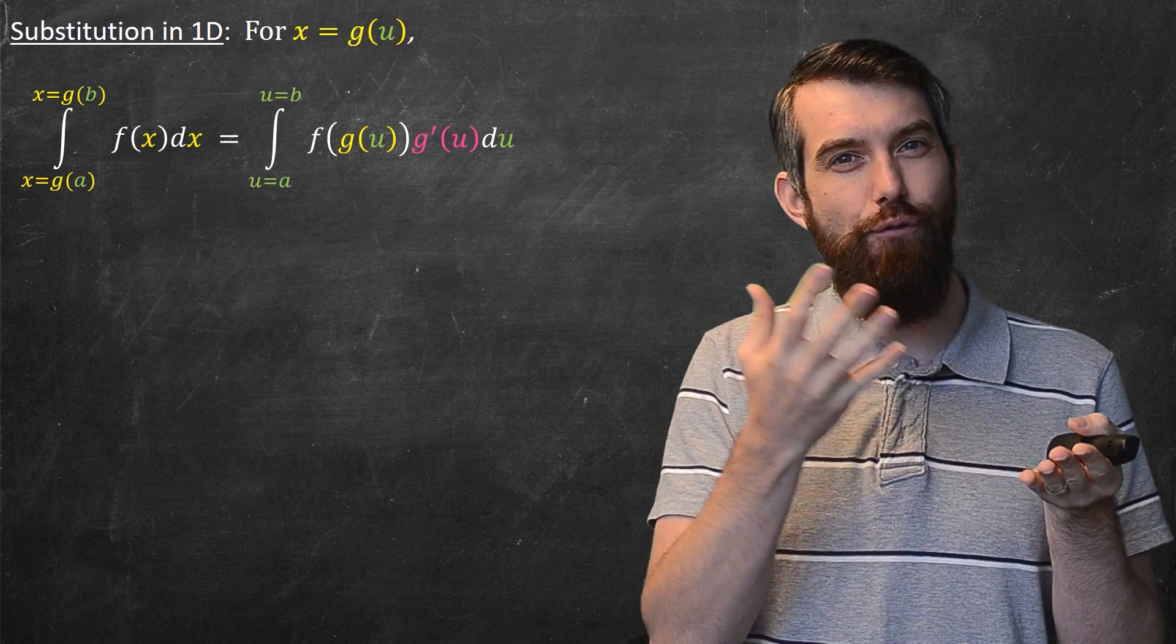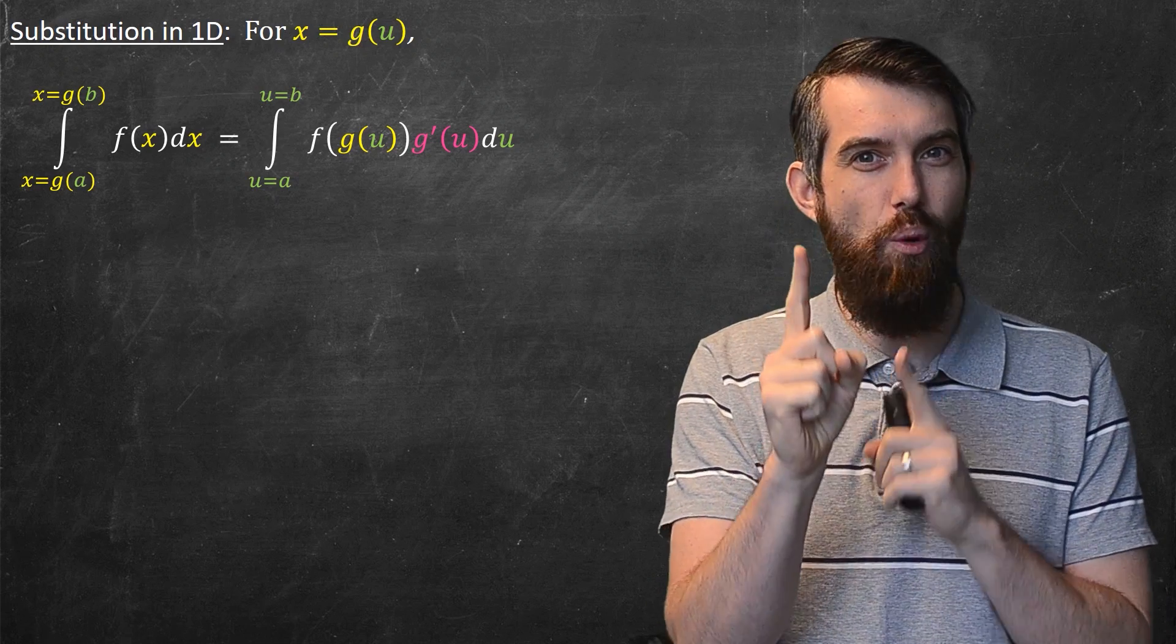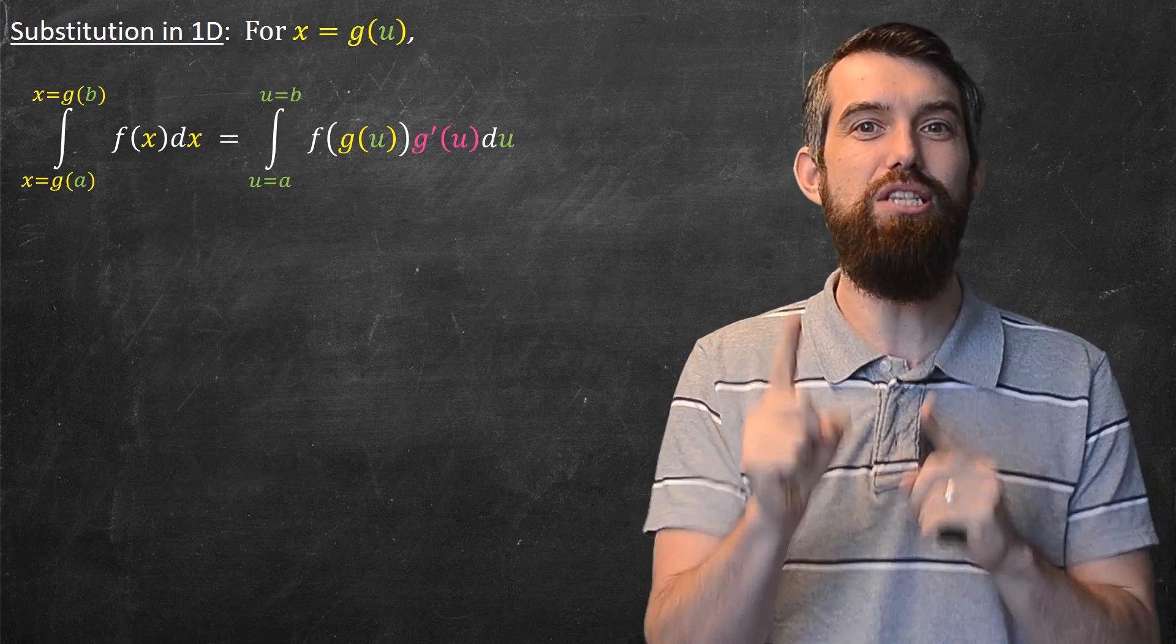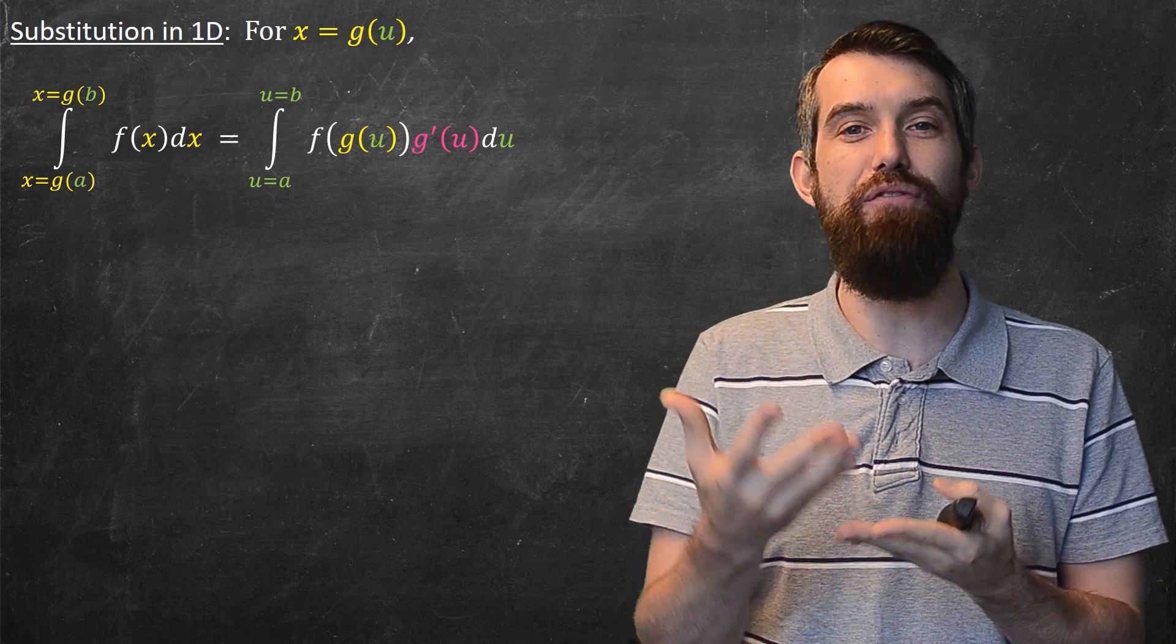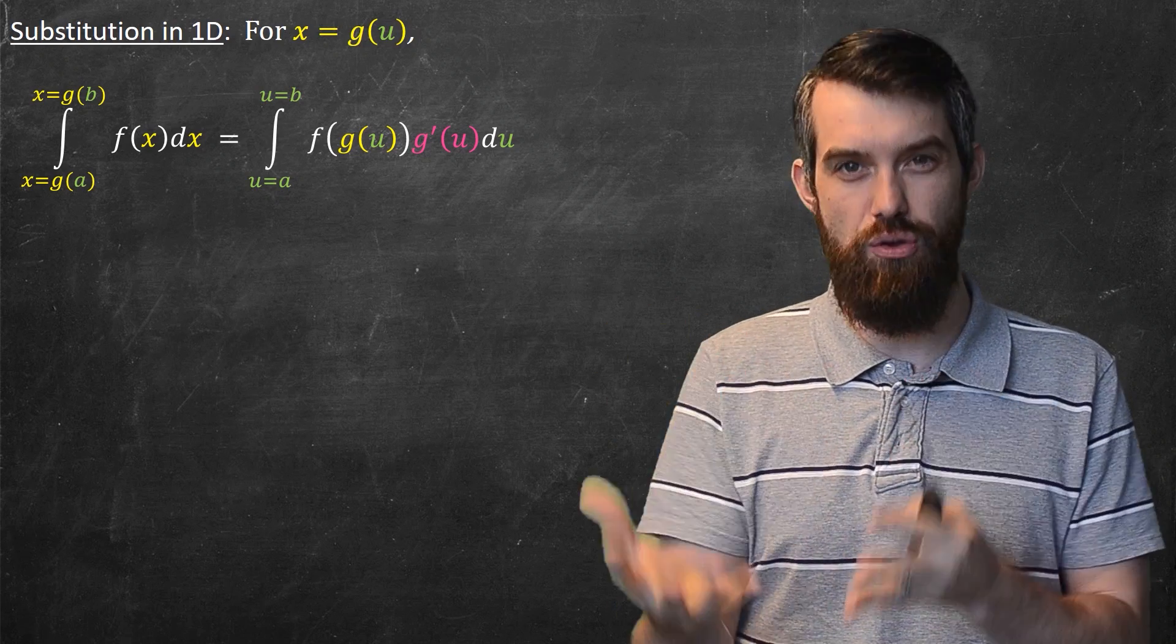And the dx transforms into a du, but there's an important point to note. There is also this new factor, this scaling factor, this g prime of u. And that was u substitution.